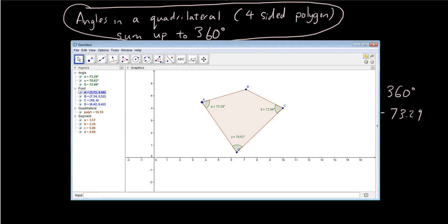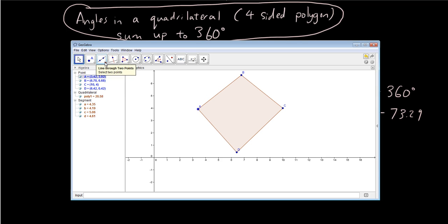Well, let's have a look at it in GeoGebra. What I'm going to do is I'm going to delete these angles first. So I'm just going to delete them from the objects menu. So I have a quadrilateral.